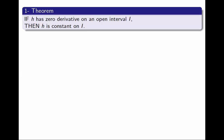First, a theorem we already know. I remind you that we know if a function has zero derivative on an open interval, then it must be constant. That's something we proved in the previous video, and we are going to be using it here. This was an application of the mean value theorem.